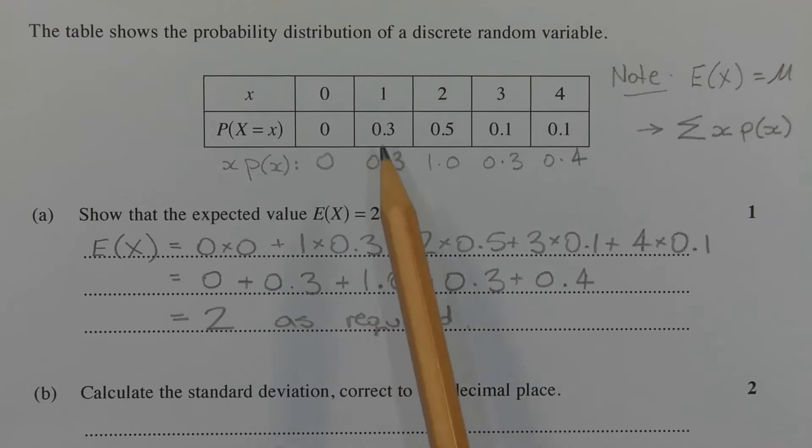I've shown it in two different ways. One way is to create a third row under the table, and it's the x px row. I find these values by multiplying each score by its associated probability, so it's similar to the fx column in a frequency distribution table. So 0 times 0 is 0, 1 times 0.3 is 0.3, 2 times 0.5 is 1.0 and so on. Then we add these values together, as I've shown in the working out here. Adding these values together, we get 2 as required.